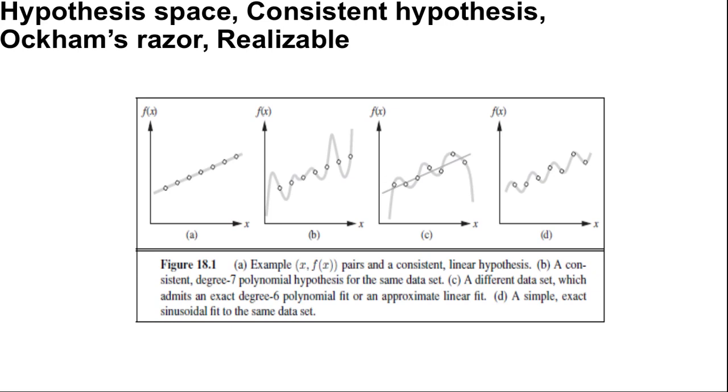We will see that the expressiveness-complexity trade-off is not as simple as it first seems. It is often the case, as we saw with first order logic, that an expressive language makes it possible for a simple hypothesis to fit the data, whereas restricting the expressiveness of the language means that any consistent hypothesis must be very complex. For example, the rules of chess can be written in a page or two of first order logic but require thousands of pages when written in propositional logic.